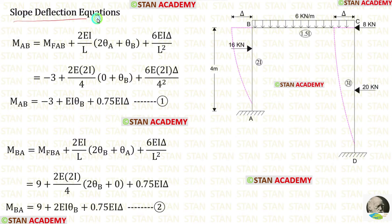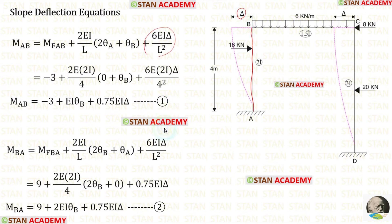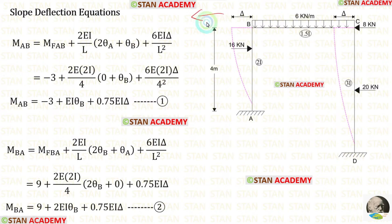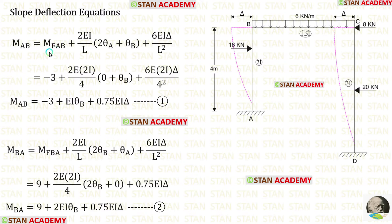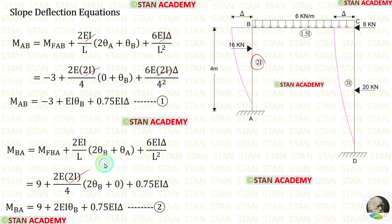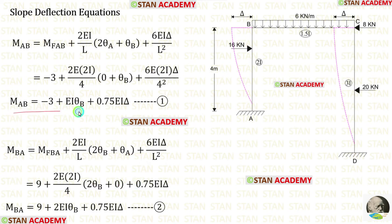Now let us make the slope deflection equations, starting with column AB. Since column AB is subjected to sway, we add the sway term 6EI·delta / L² to the equations. Since sway occurs towards the left side, these moments will be positive. Applying the fixed end moments, L = 4, and moment of inertia 2I — and since point A is a fixed support, theta A = 0 — we obtain two equations.